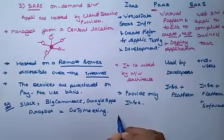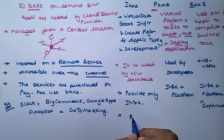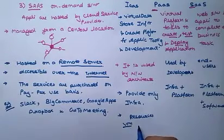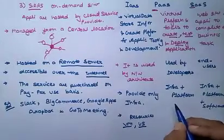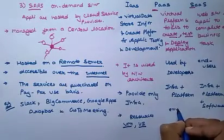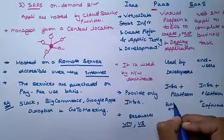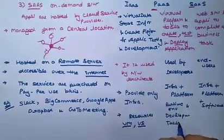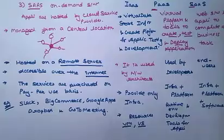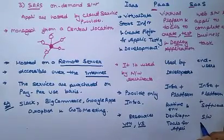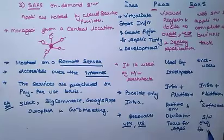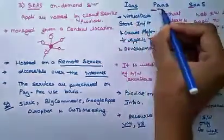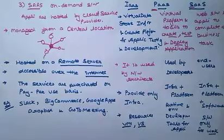The last difference is the type of access each provides: IaaS provides access to resources such as virtual machines and virtual storage. PaaS provides access to environments, runtime, and development tools for applications. SaaS provides software only for completing work. These are all the differences between IaaS, PaaS, and SaaS. This is all for today's video, I hope you liked it.